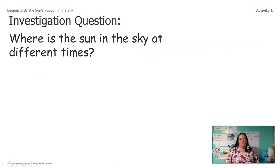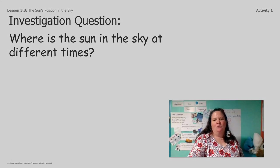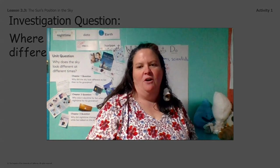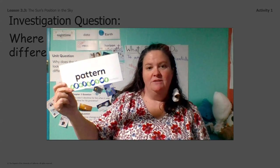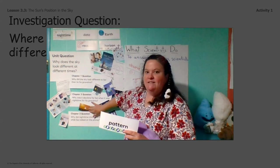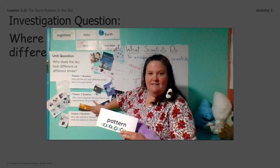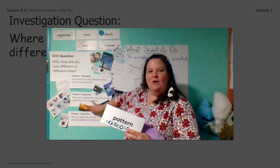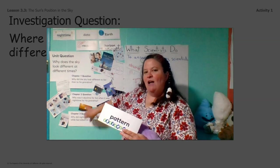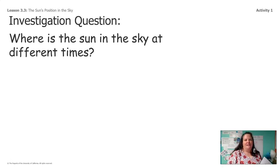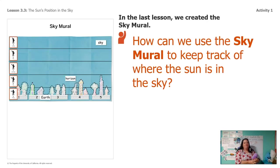In order to investigate that question, we've been gathering data. One thing we did is we looked for patterns — we looked at a video of the sunset. We're going to make some observations today to gather more data to help answer this question: where is the Sun in the sky at different times?